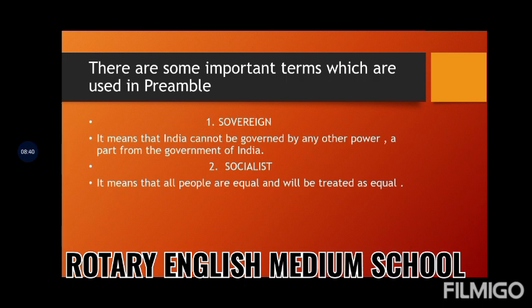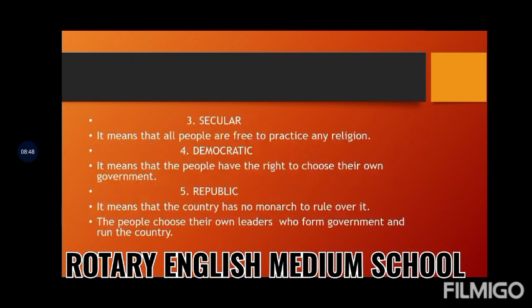So these are the five terms used in the preamble: sovereign, socialist, secular, democratic, and republic. I hope you have understood all these five concepts. Today you are going to read the textbook thoroughly and write the new words in your notebook.